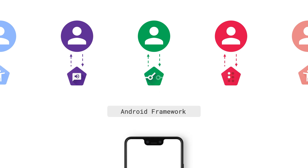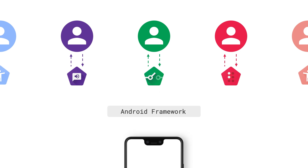Remember, you don't talk directly to each accessibility service. Instead, you write just your one app, and the Android framework communicates with the accessibility services for you. Most of the time, if you're using standard views like text views and buttons, they are built to support accessibility out of the box. This means that most of the time, these standard views will present information and allow users to perform actions using their accessibility services of choice with little effort on your part.